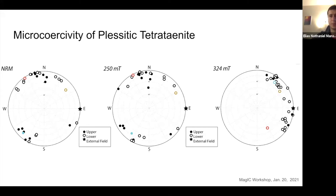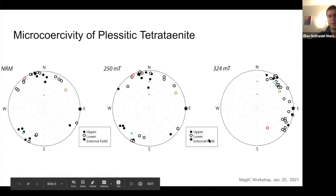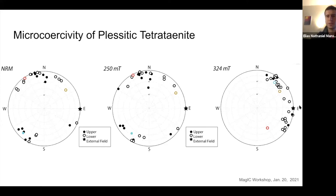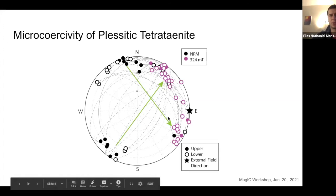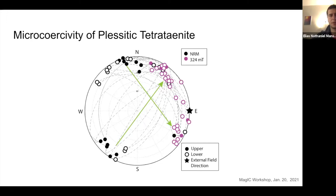However, when we applied the 324 millitesla step, we see the grains flip antipodally to the direction of the applied field, which is shown by this star. This is more easily seen in this figure, which shows the NRM and the 324 millitesla steps. This is something we expect for tetraenite — this flipping in the antipodal direction — and so we expect our coercivity is somewhere between 250 and 324 millitesla.